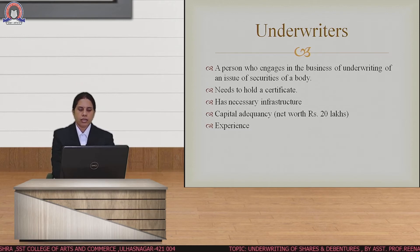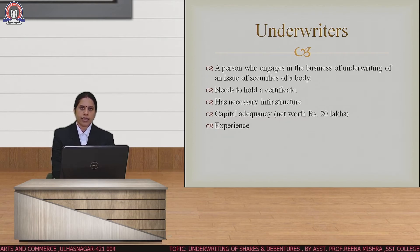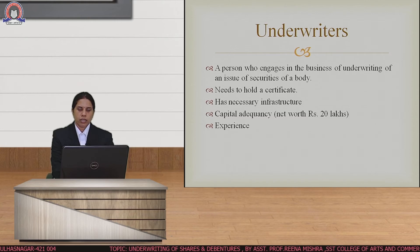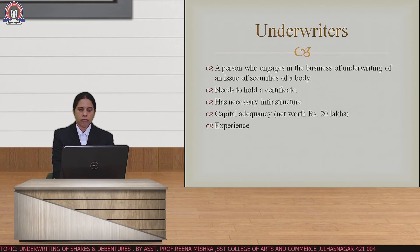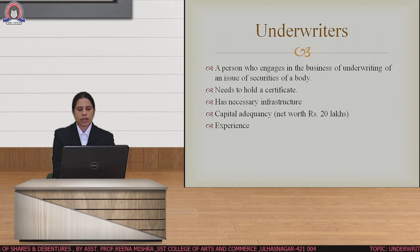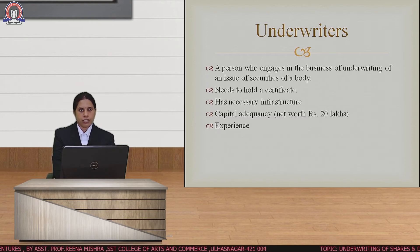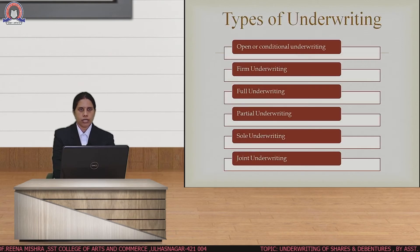Underwriters are persons who engage in the business of underwriting securities of a corporate body — they may be individuals, partnership firms, companies, banks, financial institutions, merchant bankers, or brokers. These underwriters must hold a certificate, except in the case of a broker. They should have proper infrastructure in terms of building and space. The capital adequacy expected from underwriters is a net worth of ₹20 lakhs. Underwriters must also have considerable experience in underwriting securities.